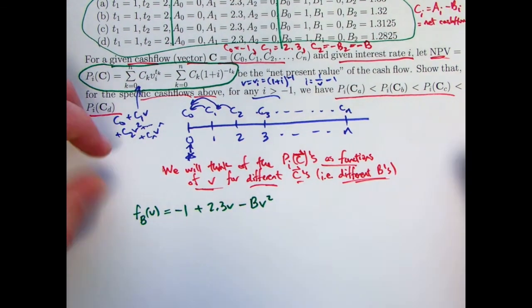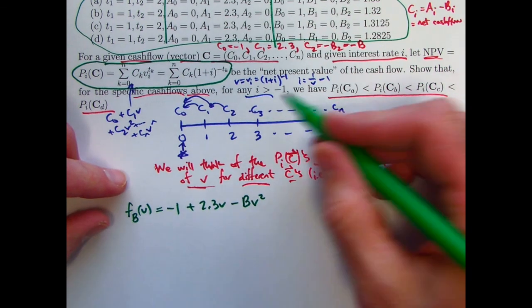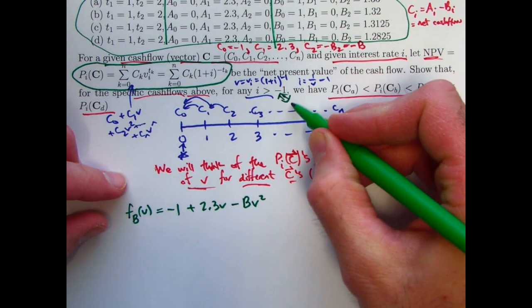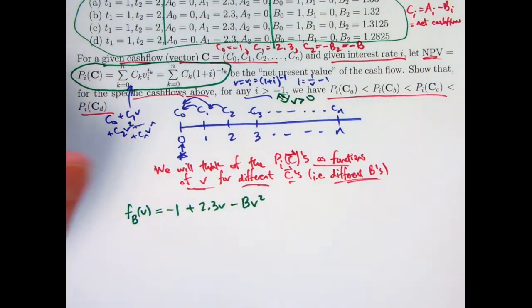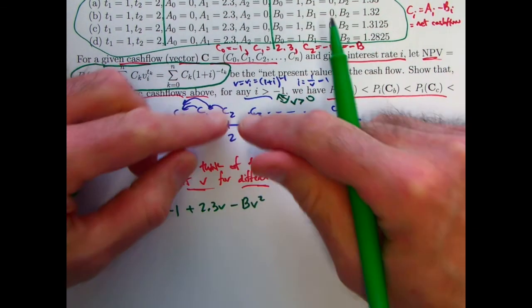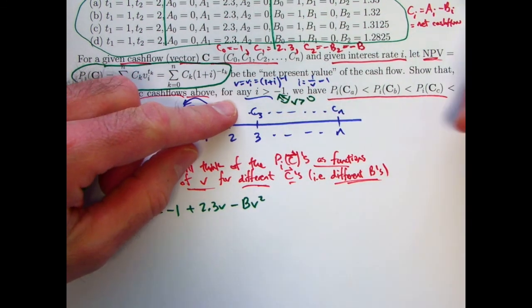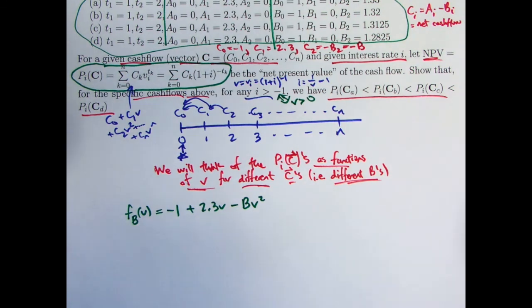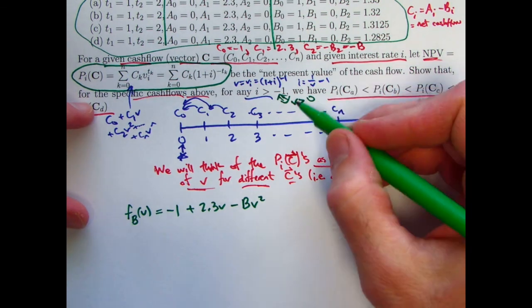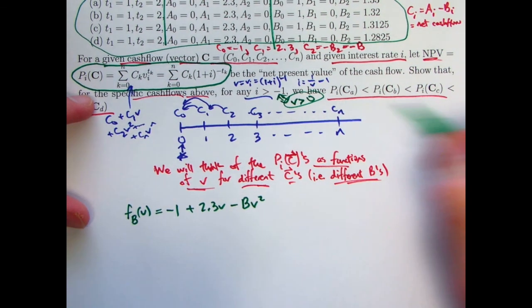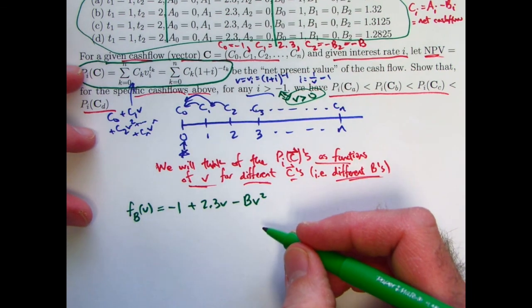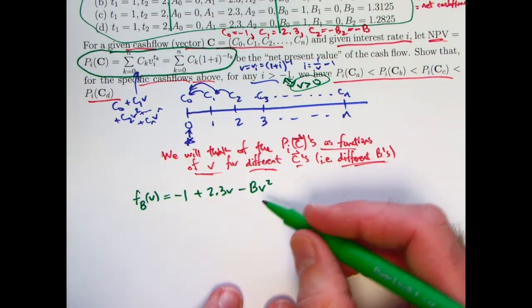As far as answering the question, explaining why for any i greater than negative 1, which is equivalent to any V that's positive, we want to think about this being true for V positive, which is equivalent to i being greater than negative 1. To finish the problem, it's actually pretty easy. You can just say for any B, the first part of this function right there is the same, no matter what B2, which equals B, is. It's the last part that's different.